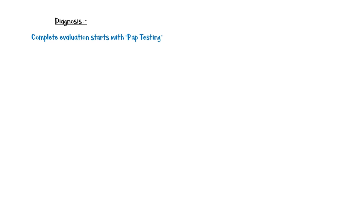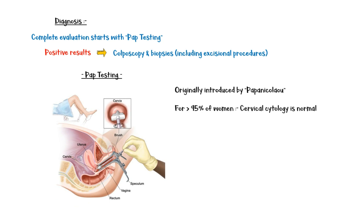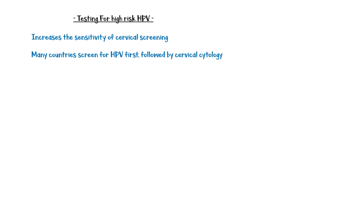Complete evaluation starts with PAP testing. Positive results should prompt colposcopy and biopsies, including excisional procedures. PAP testing was originally introduced by Papanicolaou. In this test, a small brush is used to sample cells from the transformational zone, which are then examined under the microscope after several preparations. For more than 95% of women, cervical cytology is normal. Testing for high-risk HPV increases the sensitivity of cervical screening, and therefore nowadays many countries screen for high-risk HPV first, followed by cervical cytology.